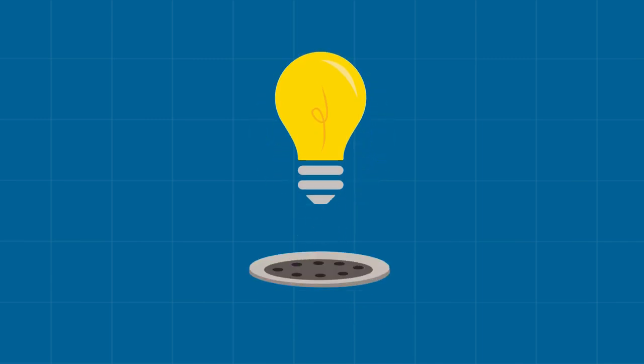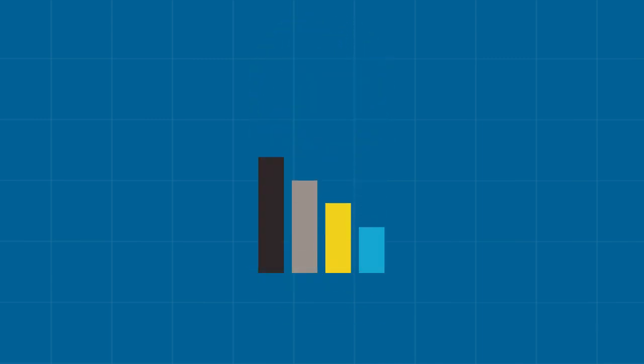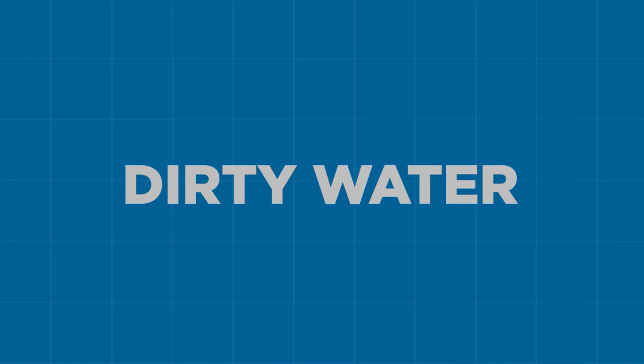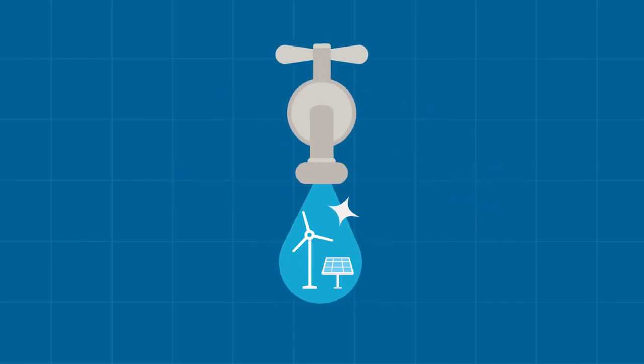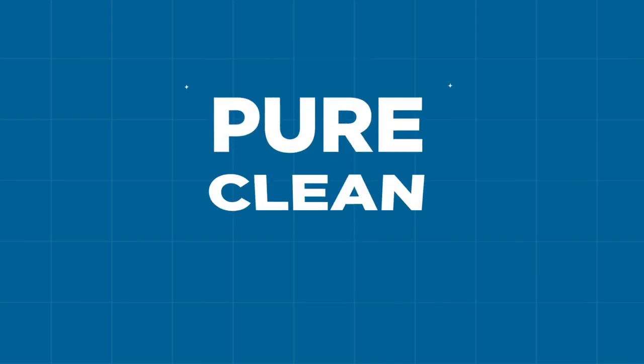Each time you use electricity, you drain a little water from the bathtub. Most of the water being poured into the tub is from faucets connected to polluting fossil fuel sources, or the dirty water. But some of the water comes from a small but growing number of faucets associated with renewable sources, which contribute to pure, clean water.